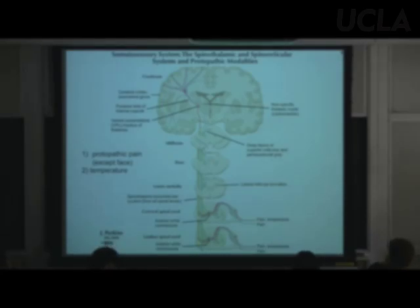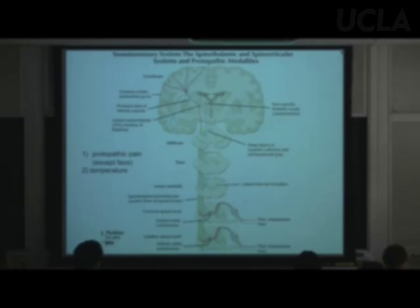Then the poorly myelinated spinothalamic axons kick in. Bad news: these don't adapt — they keep firing as long as there's tissue damage. This is the pathway that's active when people come to a clinic.